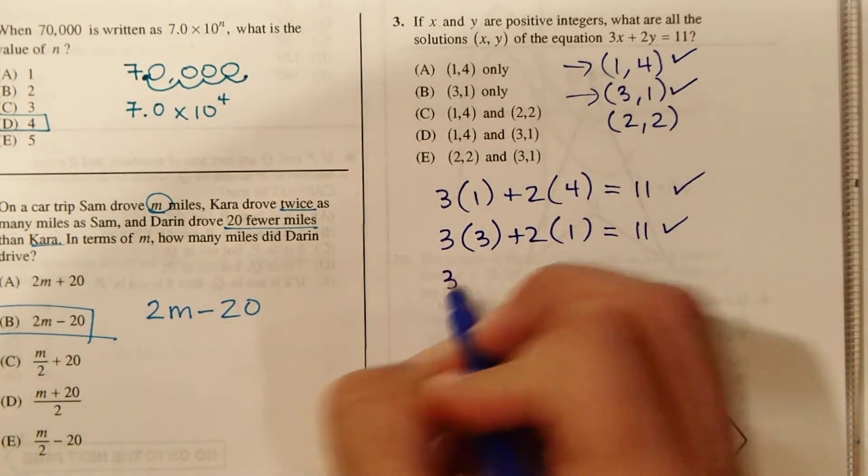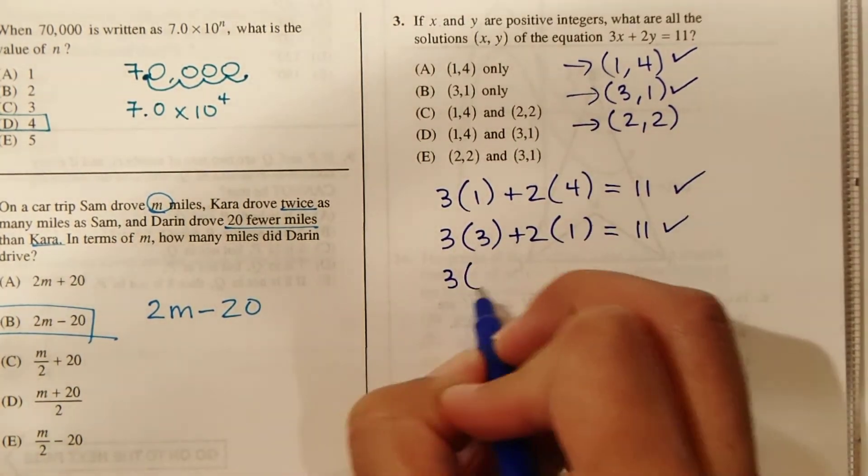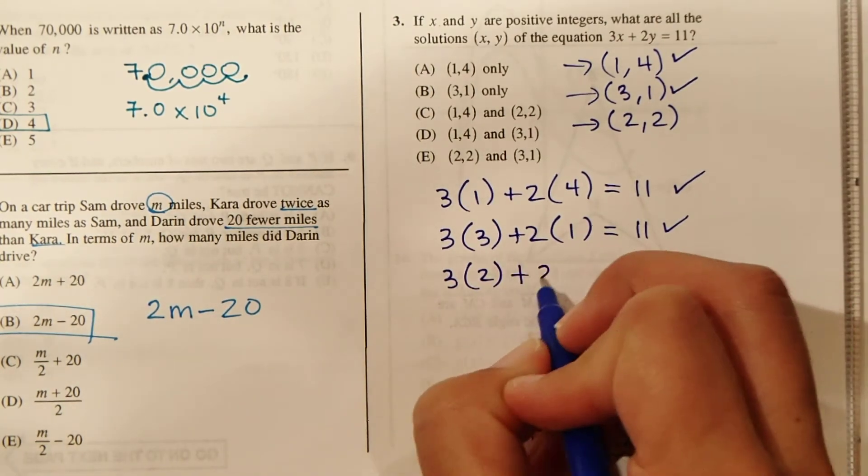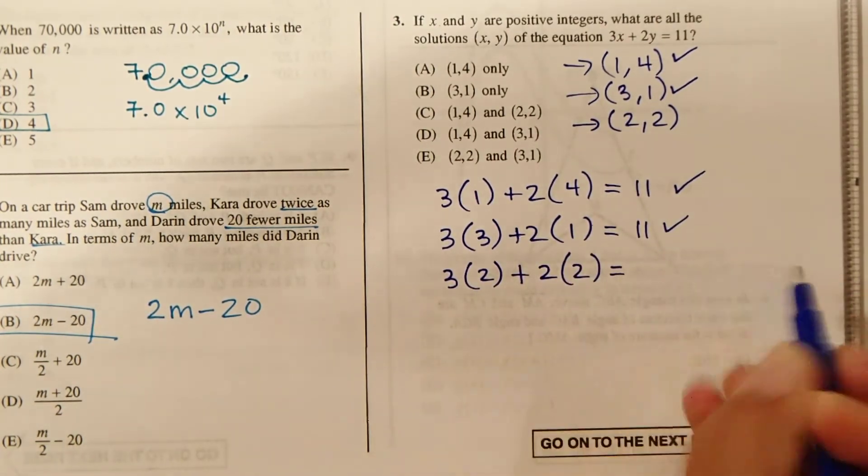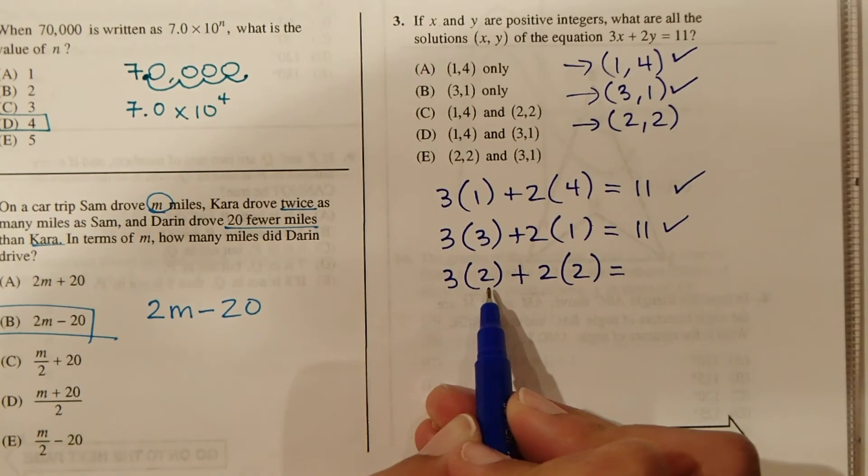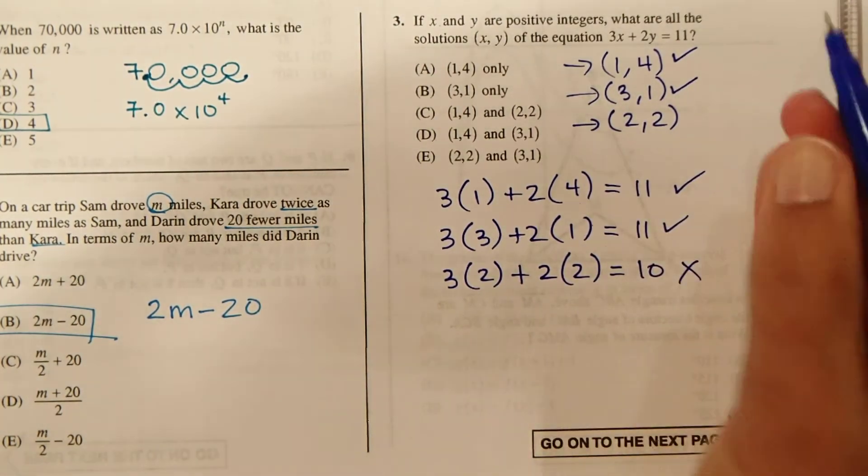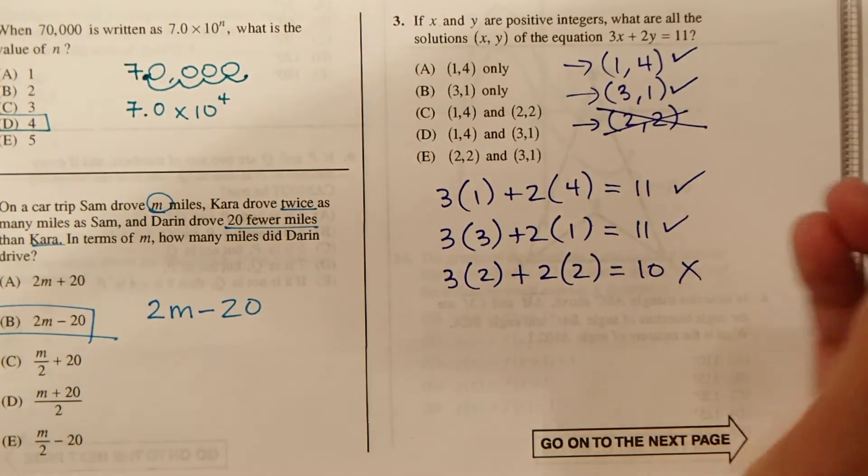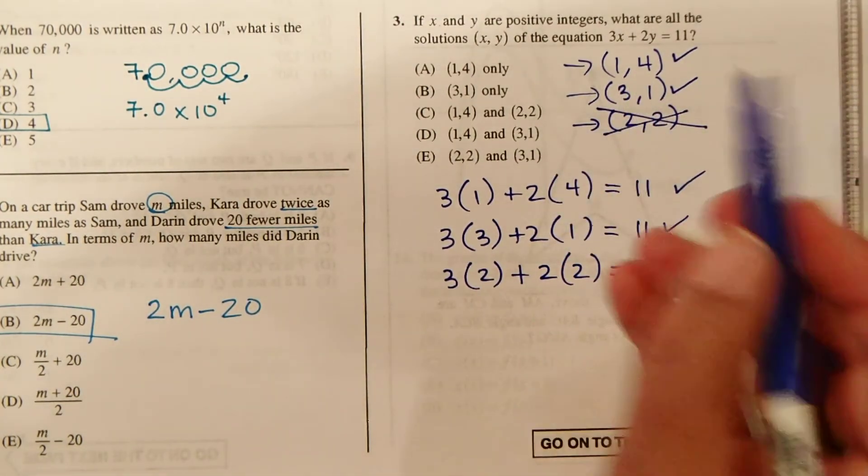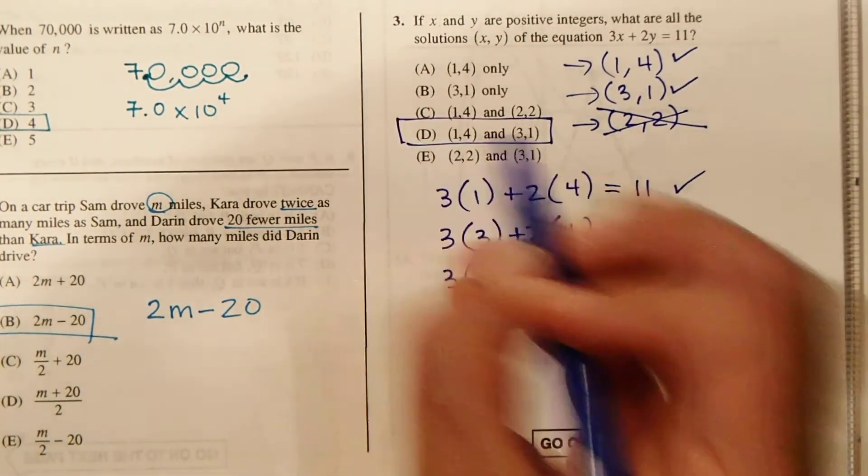Let's try 2 and 2 on this one now. 3 times 2 plus 2 times 2 equals... So this is 6 plus 4 is 10. That does not work. 2, 2 doesn't work. So we need to find the answer with (1, 4) and (3, 1). And that answer is D.